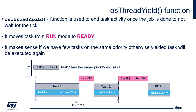The osThreadYield function is used to end the task's activities once the job is done, when we don't want to wait for a tick nor make the next iteration of the task body function. The effect of this function is to move the active task from run mode to ready mode and trigger the PendSV interrupt to switch context to the next task from the ready list.